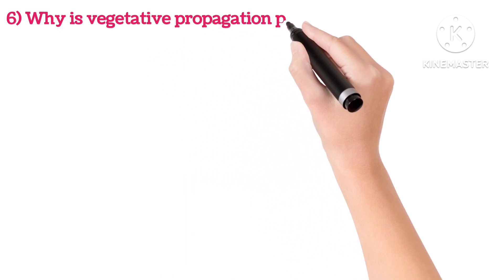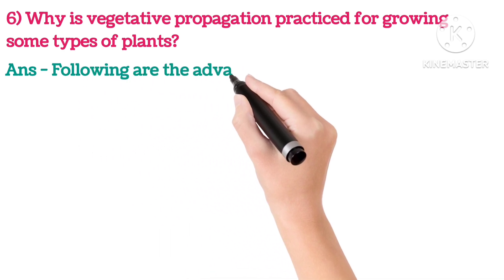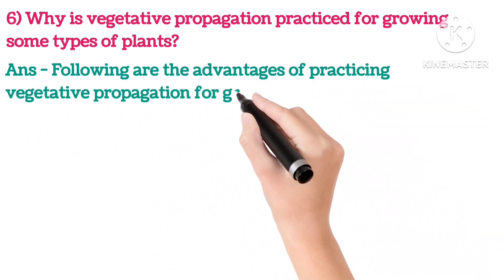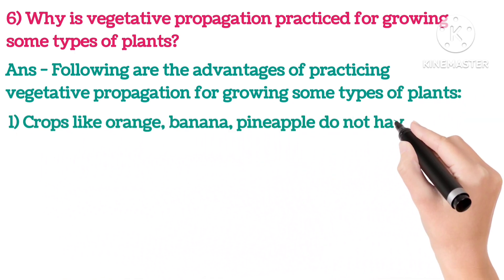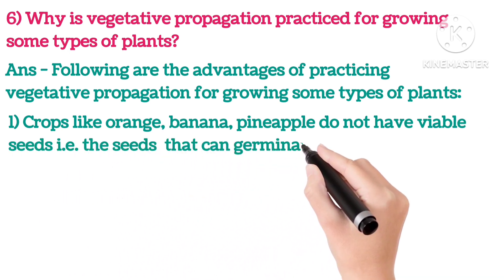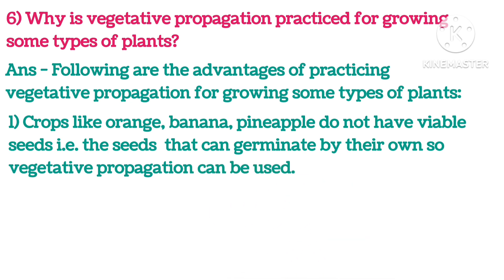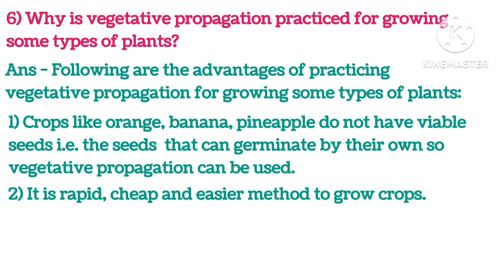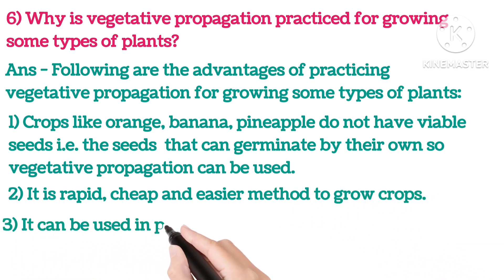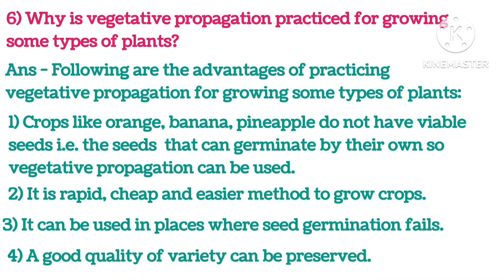Sixth: Why is vegetative propagation practiced for growing some types of plants? Following are the advantages: First, crops like orange, banana, and pineapple do not have viable seeds that can germinate on their own, so vegetative propagation can be used. Second, it is a rapid, cheap, and easier method to grow crops. Third, it can be used in places where seed germination fails. Fourth, a good quality variety can be preserved.